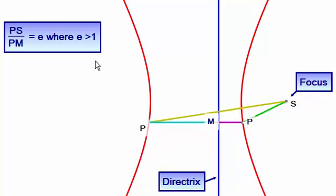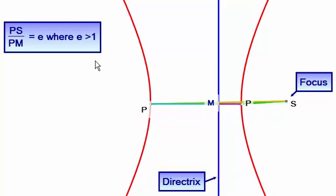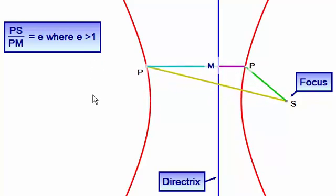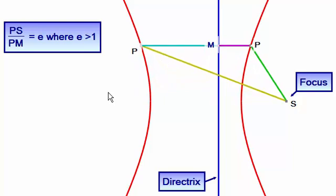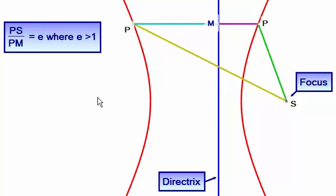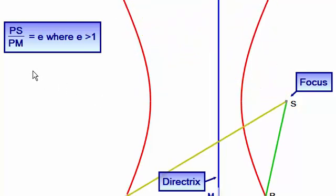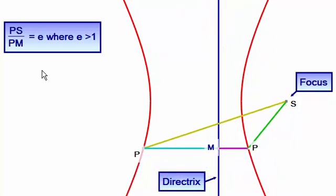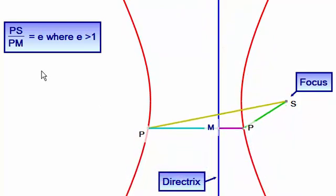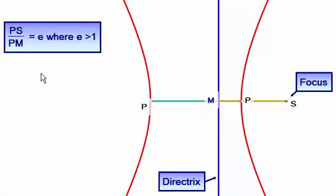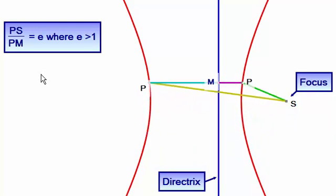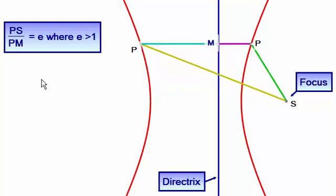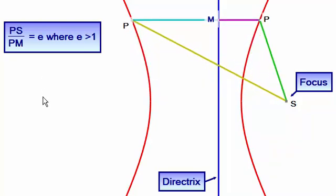Now you'll notice that in this example there's two places that P can be. And for this particular video I've set E to be equal to 2. In other words PS is twice the length of PM. And you might like to pause the video at various points and just check out that PS is twice the length of PM in both the positions that you see P.